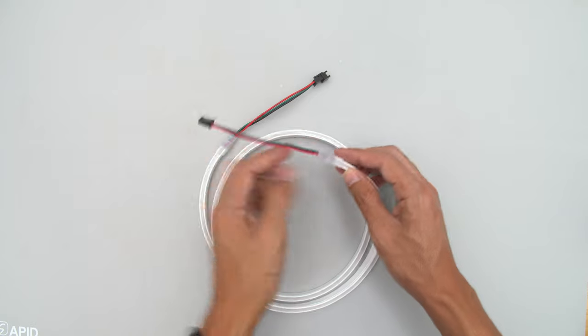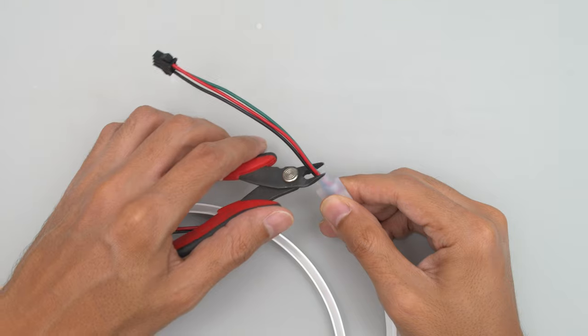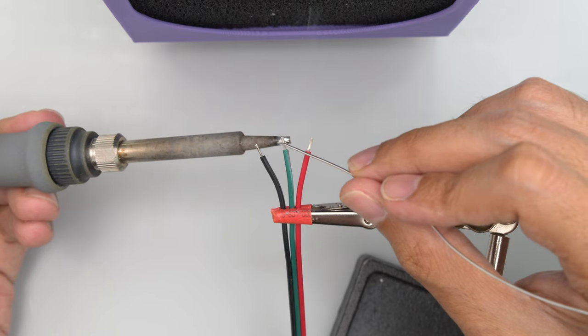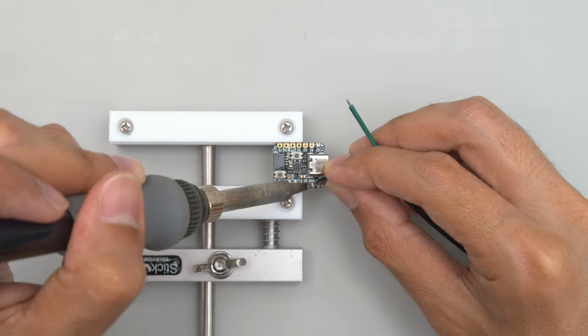The strip features pre-wired cables that we can use to connect to the CutiePie. Cut the end off of the strip and solder the wires to the pins on the dev board. Then load up our example code.